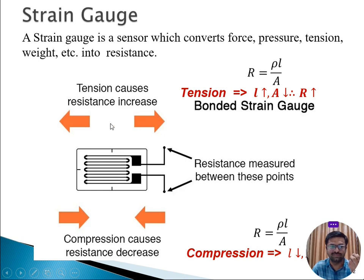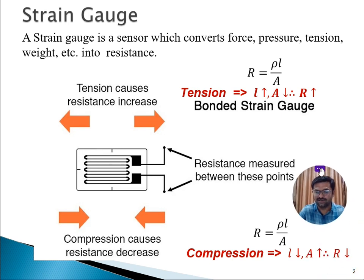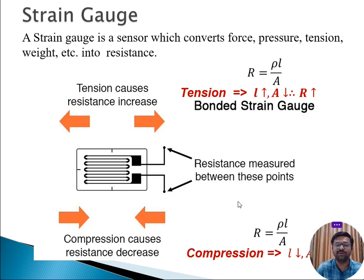So the tension caused by the applied force increases the resistance. In the case of compression, L is decreasing and A is increasing, which results in R decreasing. This is exactly how the strain gauge operates — applied force causes tension and compression, with tension increasing resistance and compression decreasing resistance.